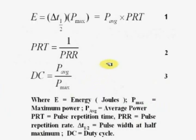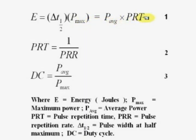We will now show the equations. The energy E is shown to be delta T half times P_max, or it can also be written as P_average times the PRT. Since an oscilloscope does not measure power — it simply measures voltage — the best approach is to measure the times, that is the PRT and delta T half, both of which are time measurements you can make on the oscilloscope.